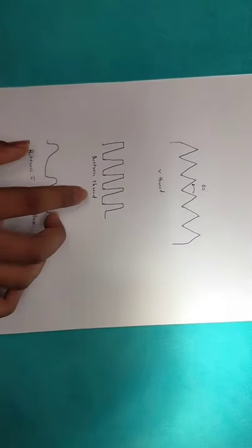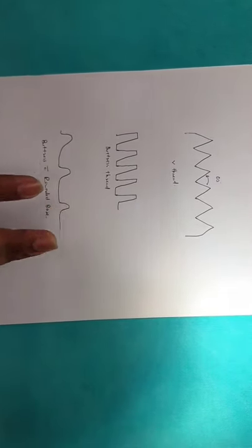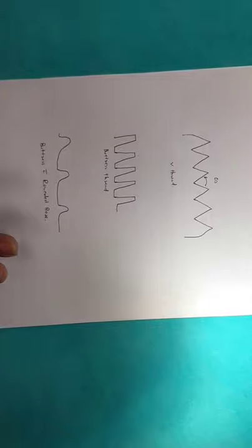Here are the types of threads. This is the V thread, this is the buttress thread, and this is the buttress thread with rounded base. These three common types of threads are used routinely.